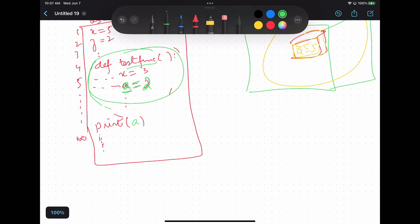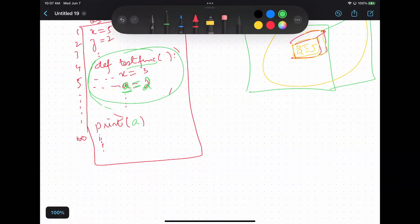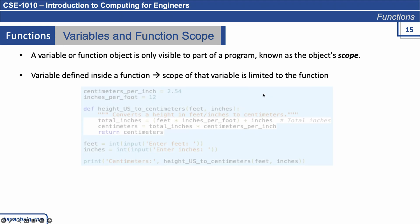I'll give you a demo. This is what we call the scope of a variable. The scope of that variable is limited to the function.